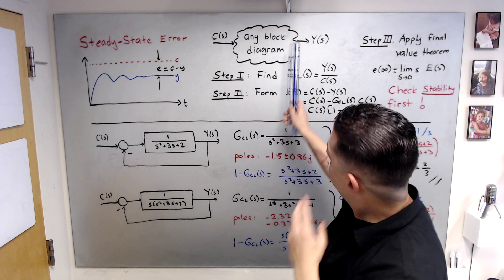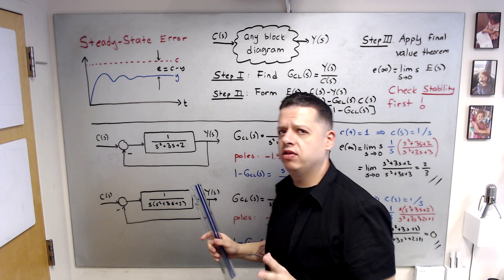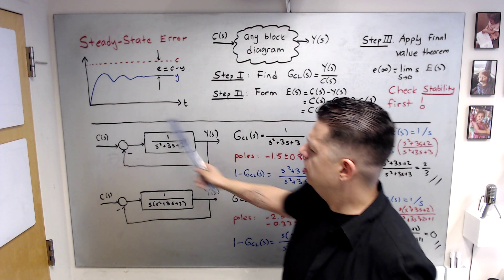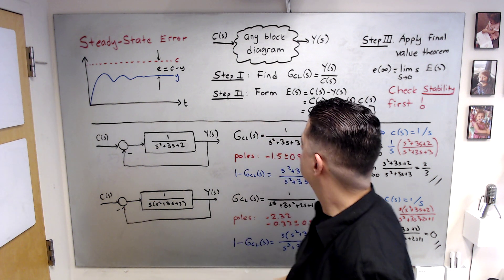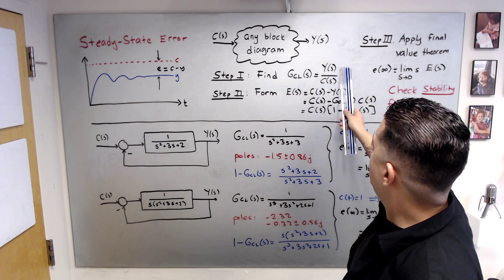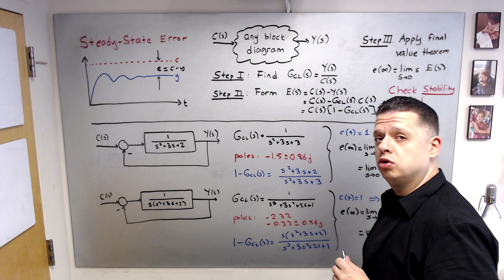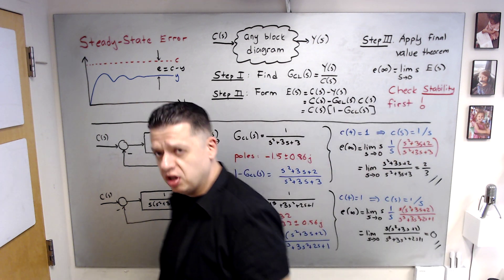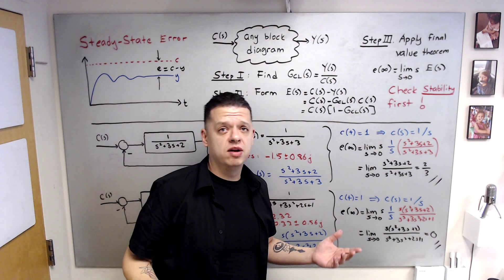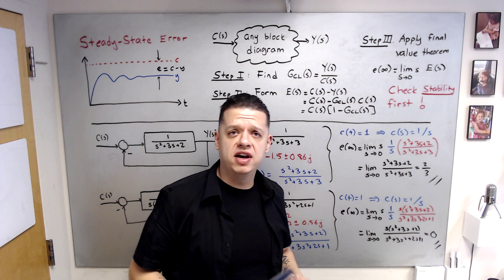Here I draw a cloud — inside this cloud it can be any block diagram you can imagine. C enters this cloud and the output exits. It can be unity feedback, non-unity feedback, it doesn't matter. Step one: find the closed-loop system transfer function between input C and output Y. Before you proceed, check if the closed-loop transfer function is stable. If it is not stable, the system will diverge and steady-state error doesn't exist. If it is marginally stable, that's another problem. Only if the closed-loop system is stable should you proceed.